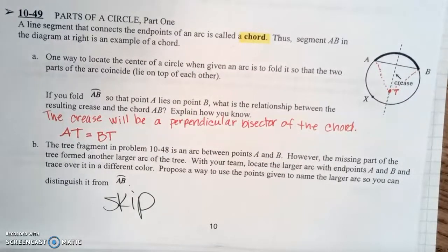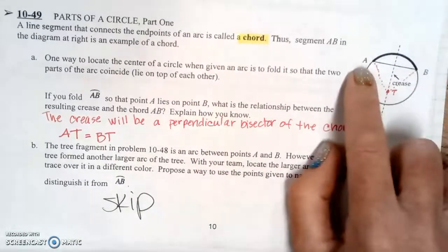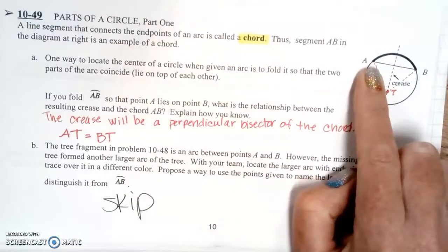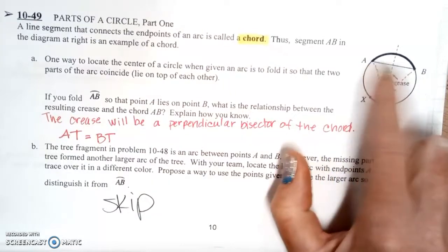A line segment that connects the endpoints of an arc is called a chord. Thus segment AB in the diagram at right is an example of a chord. So from here to here is a chord.